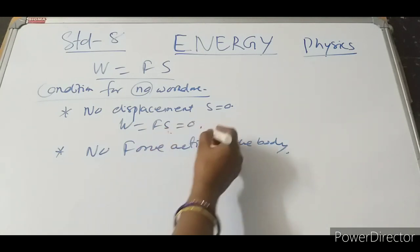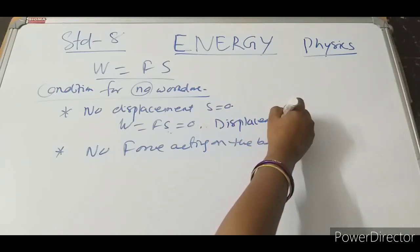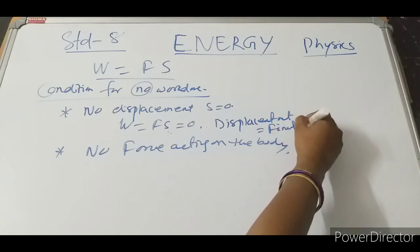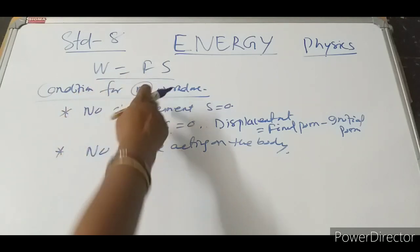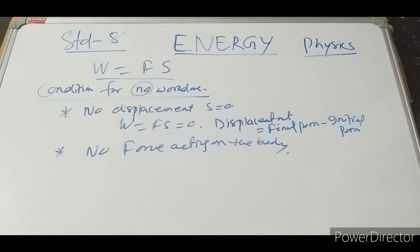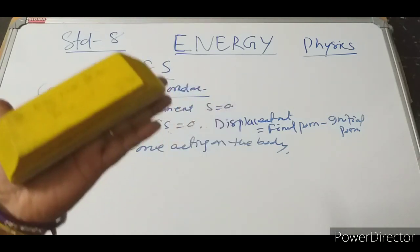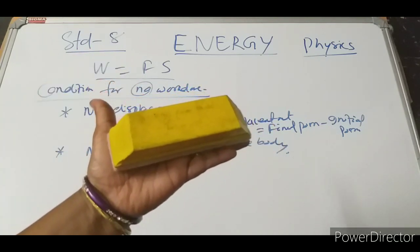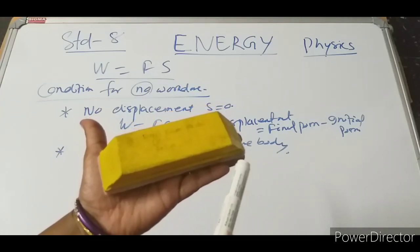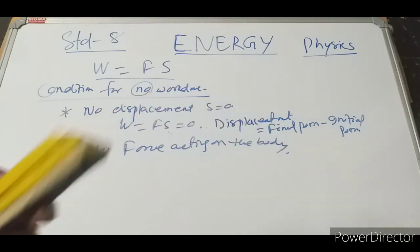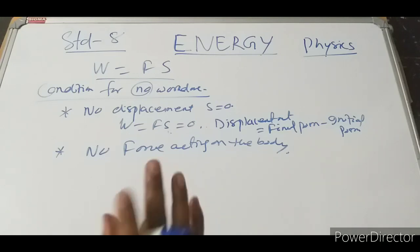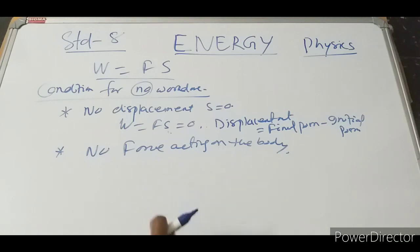Displacement is equal to final position minus initial position. For example, a body is there and no force is acting on it — no work is done. But if force is applied and the body displaces, work will be done. Another example: a big stone or wall — you apply force, but there is no displacement, so no work will be done.